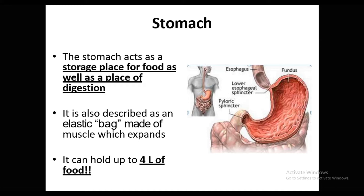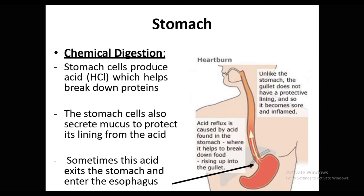The stomach acts as a storage place for food as well as a place of digestion — this is the main part where digestion starts. It is described as an elastic bag made of muscle, which expands whenever we eat something. It can hold up to 4 liters of food, though you shouldn't consume that much as it is harmful for your health.